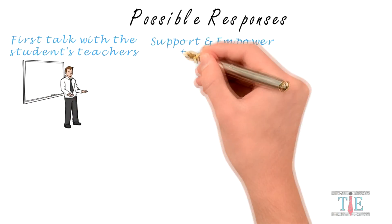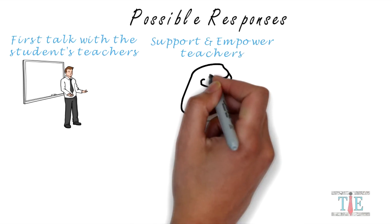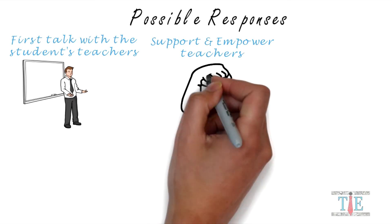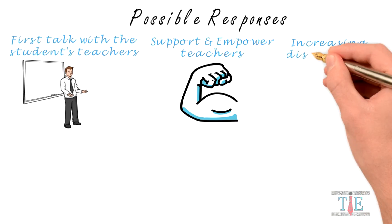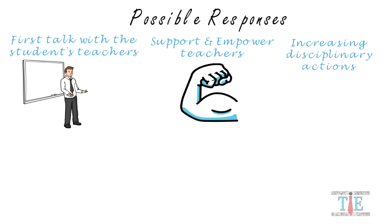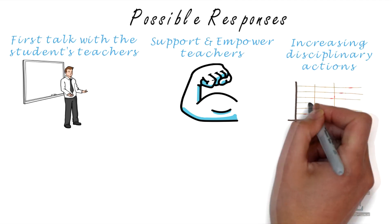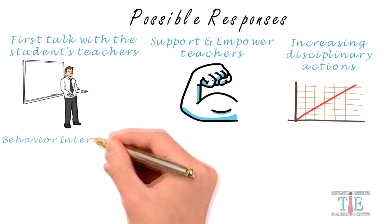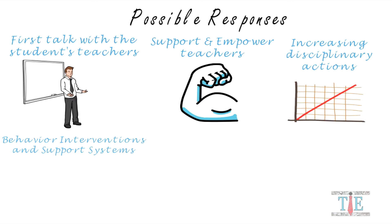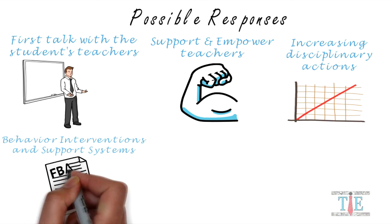Second, administrators should support and empower teachers. Allow teachers to discipline students and show teachers that you support them. Third, provide increasing disciplinary actions to the student. You may begin with a stern talking, but that fades quickly — you must move up the ladder from detentions to suspensions, bringing the parents in and so forth. Next, look into behavior intervention and support systems. When discipline doesn't work, you should look into positive supports and interventions. Schools often employ behaviorists specifically for this purpose.